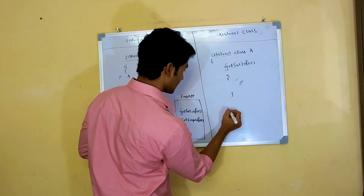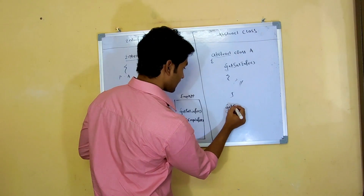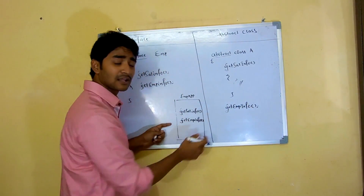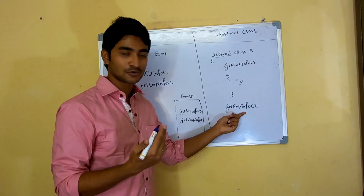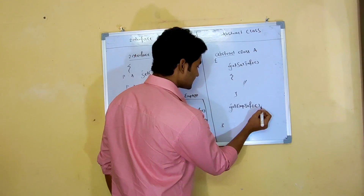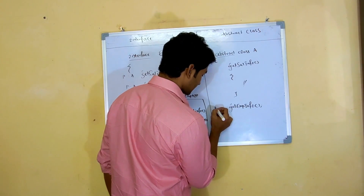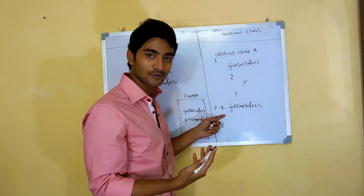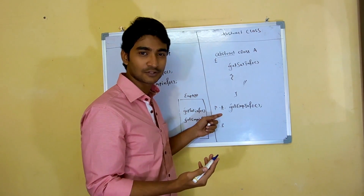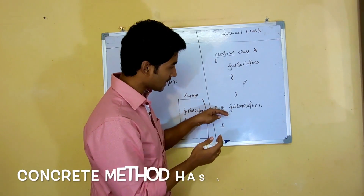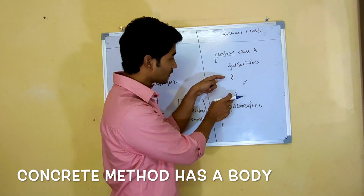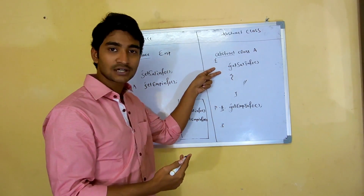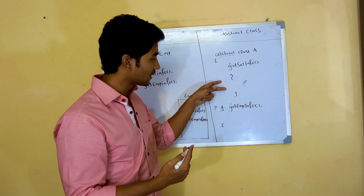Let's say you have the method 'getSalaryInfo' and you know how to develop it — it has a body with some implementation code. But then you have another method, 'getEmployeeInfo', and you really don't know how to develop it, so it has no body — just a semicolon. That makes it an abstract method: 'public abstract'. The thing we understand from here is that an abstract class can contain both concrete methods and abstract methods.